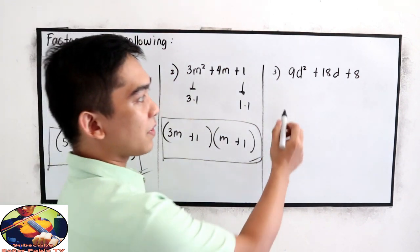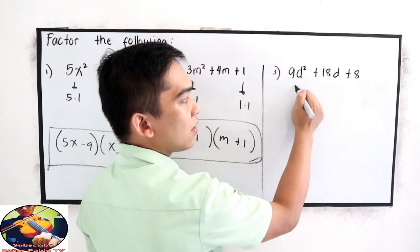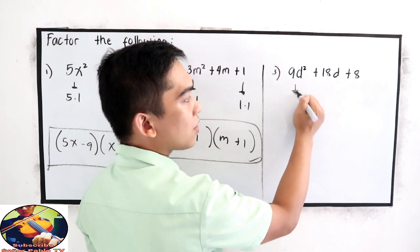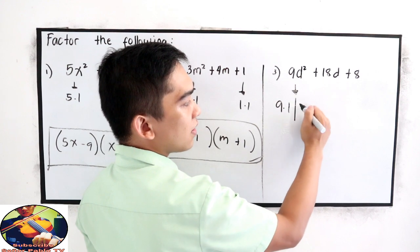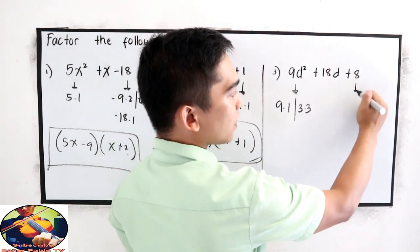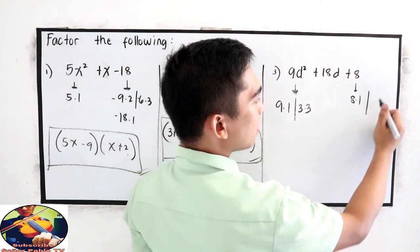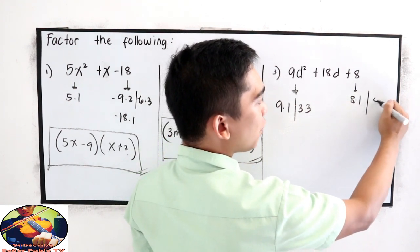Next, number 3, 9d squared plus 18d plus 8. So we have plenty factors of 9, 9 times 1, 3 times 3. And for 8, 8 times 1 or 4 times 2.